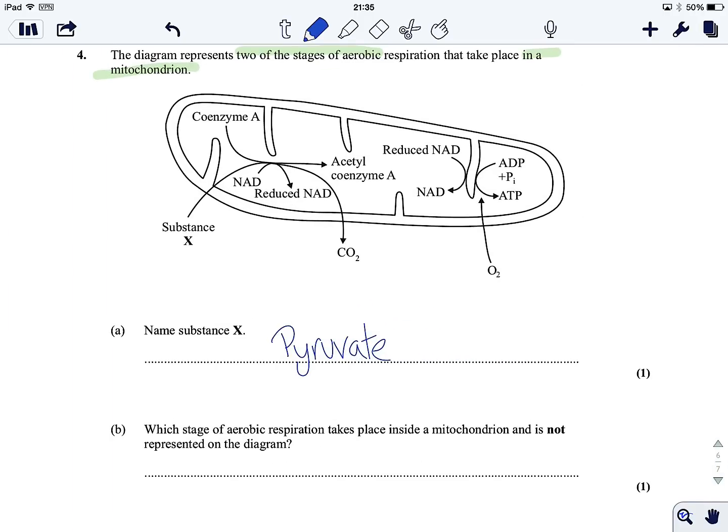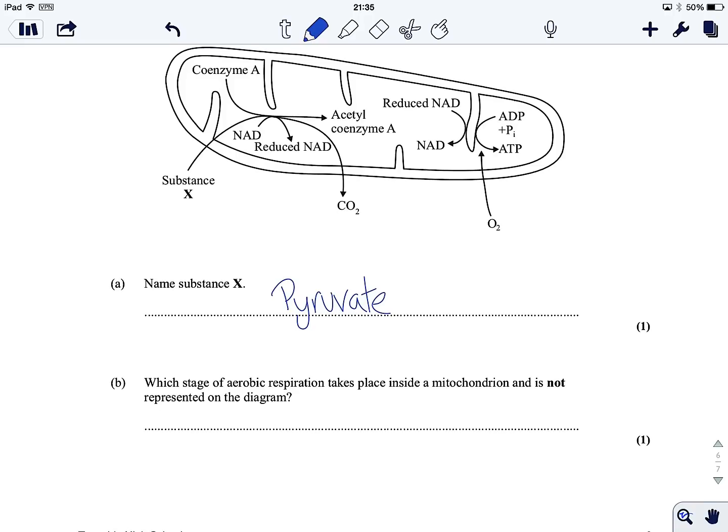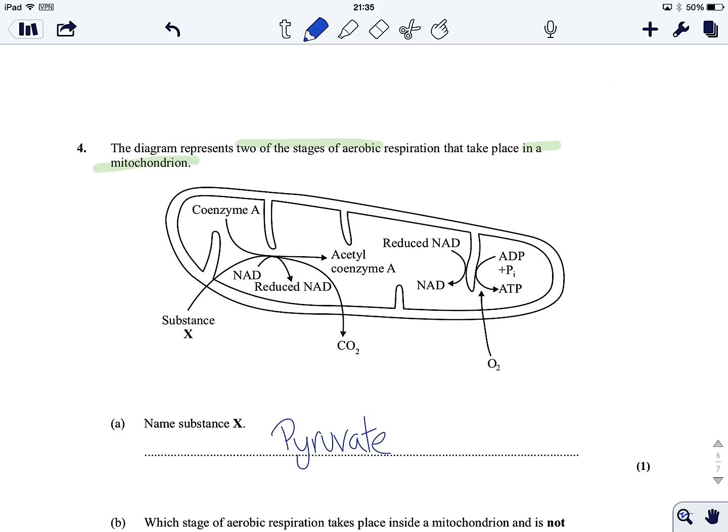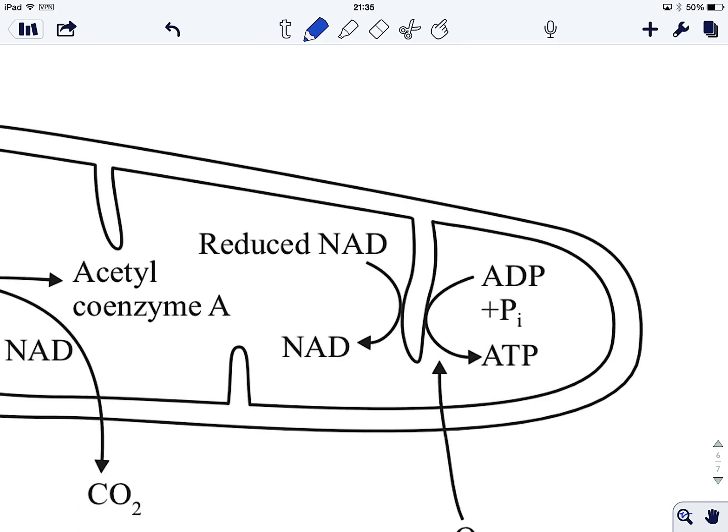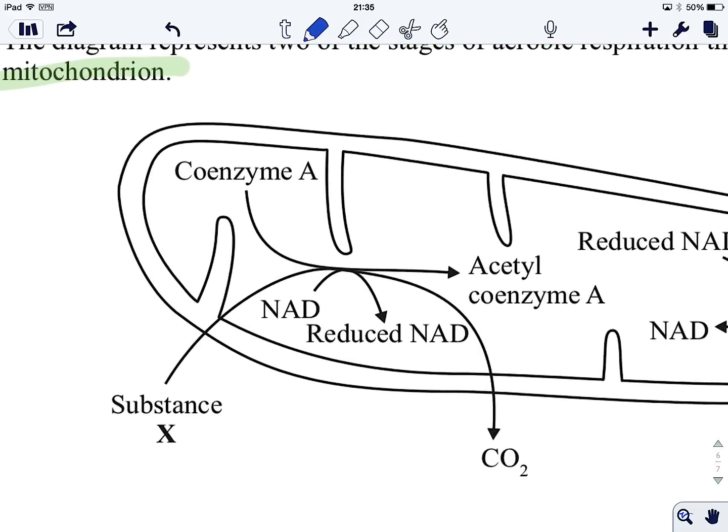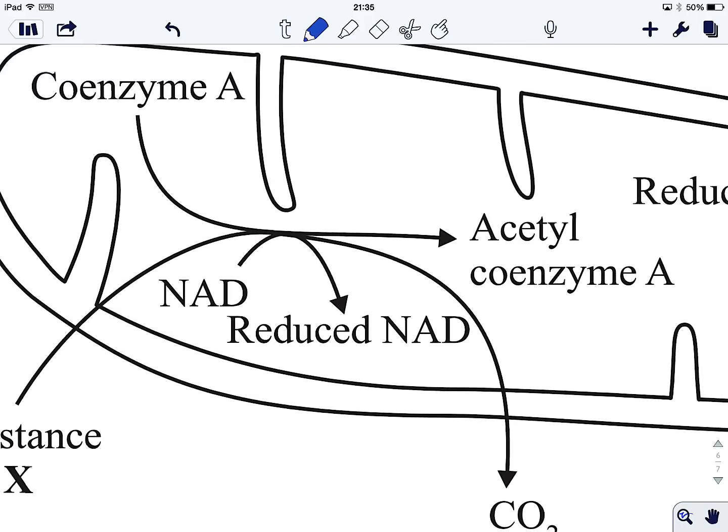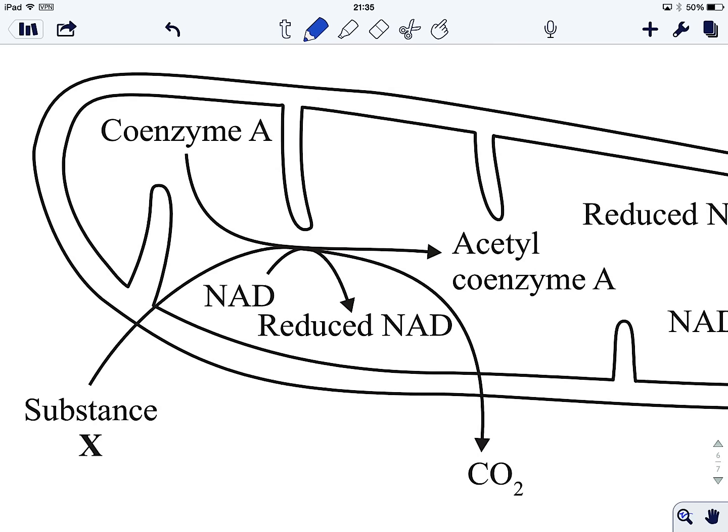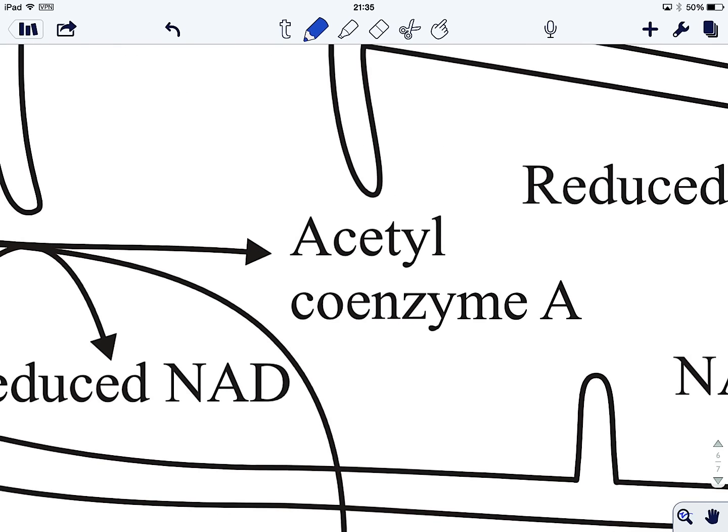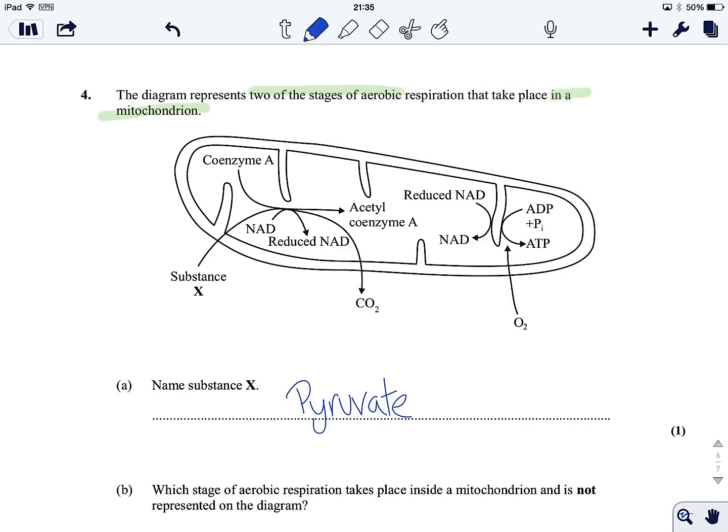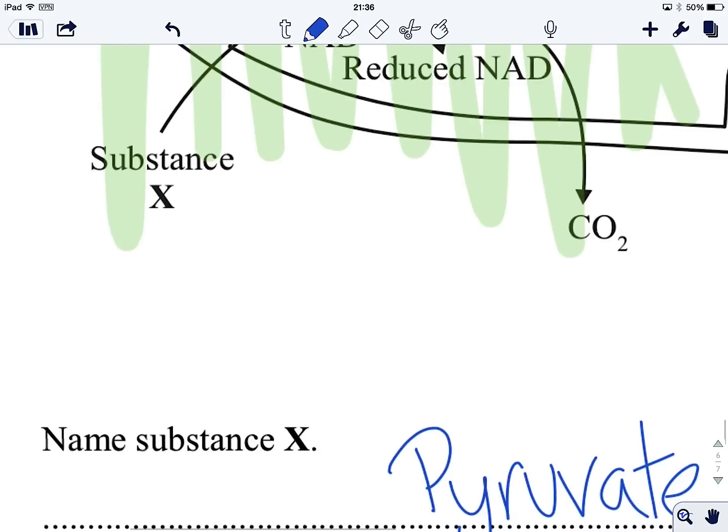So which stage of aerobic respiration takes place inside a mitochondrion and is not represented on the diagram? Well let's have a look, we've got two stages. One stage is here and one stage is here. The first stage involves substance X which we've identified as pyruvate entering the mitochondrion and then because NAD is reduced it becomes oxidized and we get this compound acetyl-CoA formed at the end. And this is of course link reaction. So all of this here, this is all link.